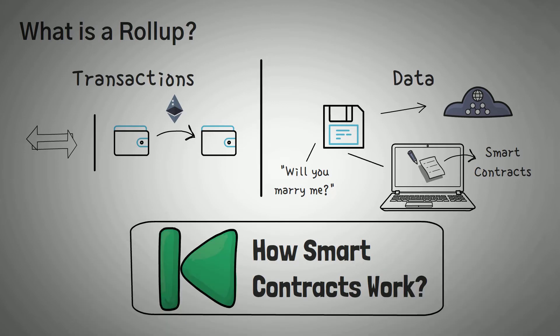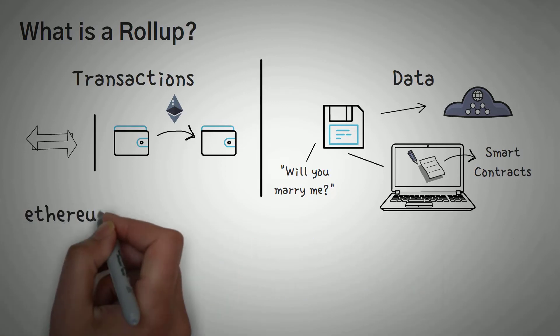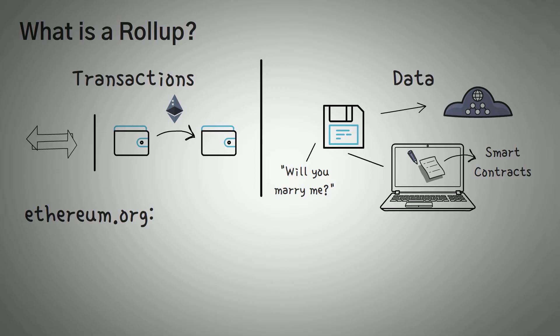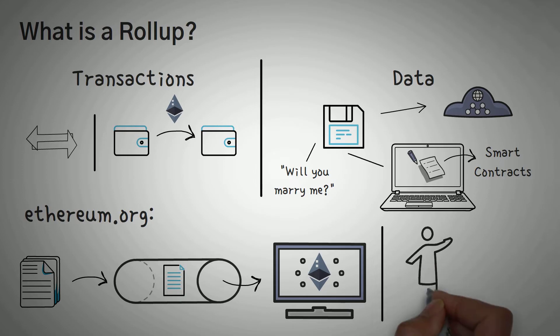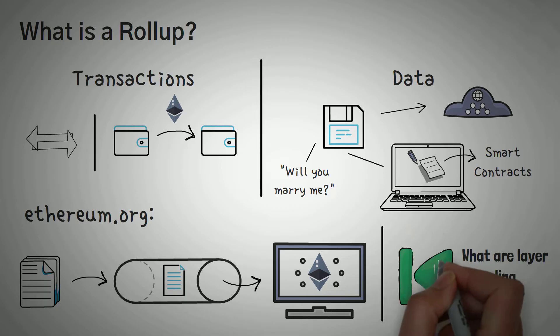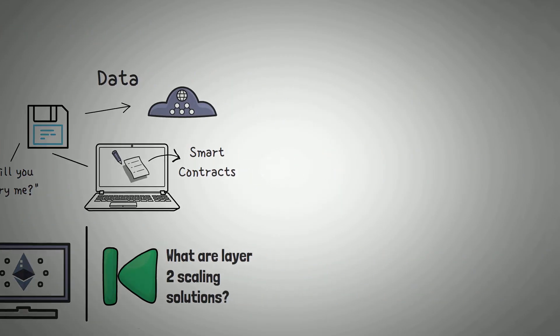According to the Ethereum.org website, a rollup is a solution that performs transaction execution outside of the main Ethereum chain, but then posts final transaction data on the main chain. If you don't know what layer 2 scaling solutions are, definitely check out our video on that topic. This video is about the specifics of rollups.